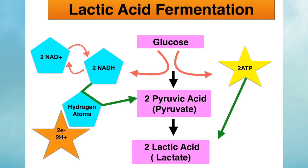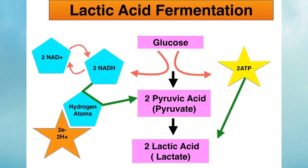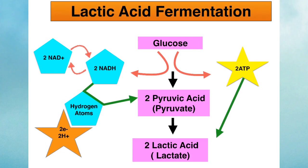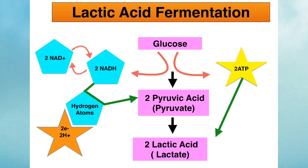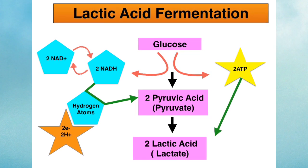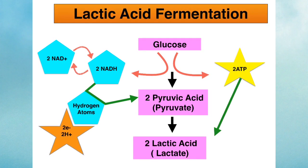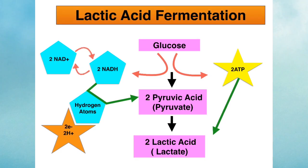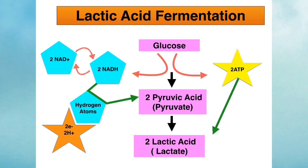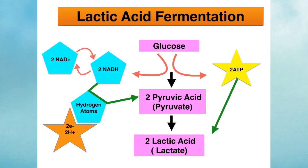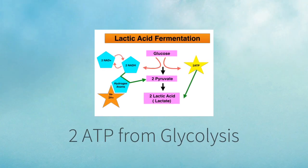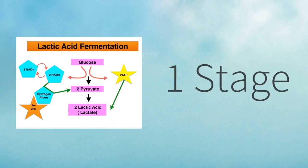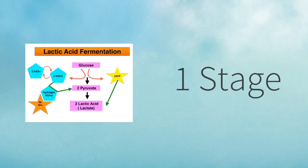Let's run through the process. At the end of glycolysis, two pyruvic acid molecules were formed. These then received the hydrogen atoms from those two NADH molecules. Those hydrogen atoms contained very important electrons and protons, and so converted the two pyruvic acid molecules into two lactic acid molecules, with a net gain of two ATP molecules — those formed during glycolysis. And this is all still a one-stage process.